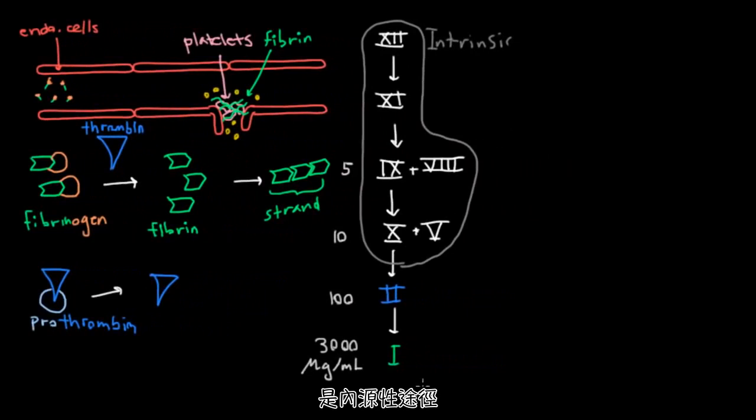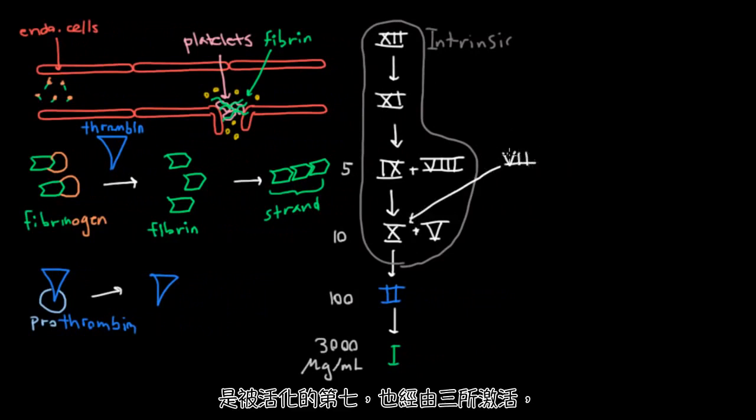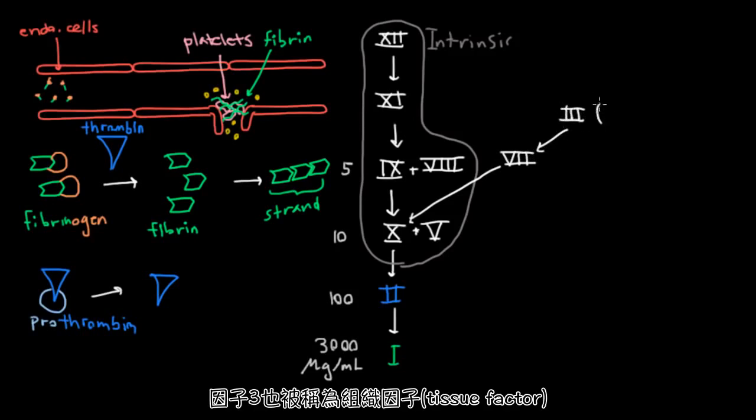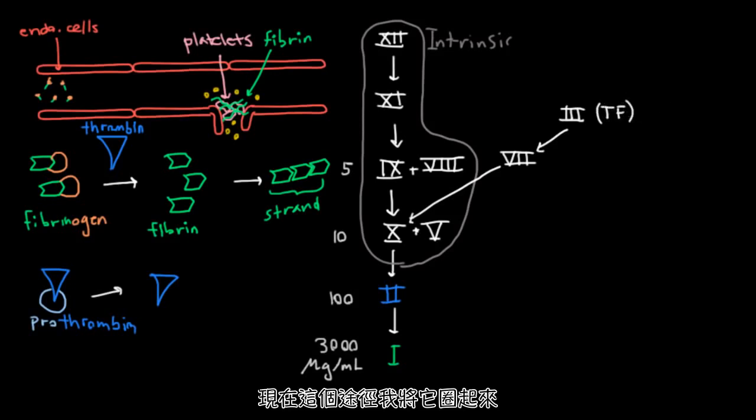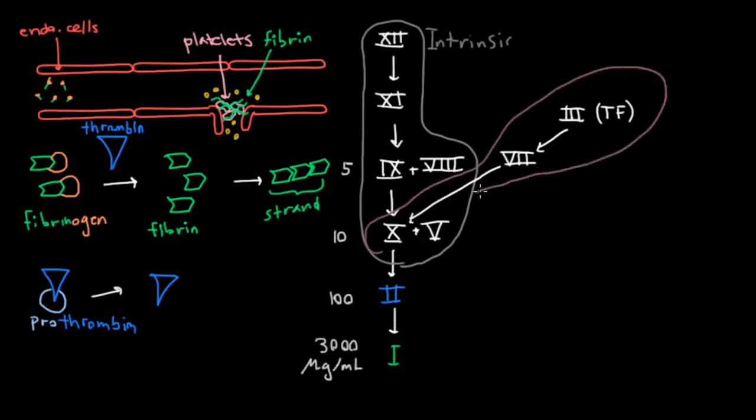But anyway, I said that this was the intrinsic pathway because there is another pathway, which also leads to an activated 10, but in this other pathway, what activates the 10 is an activated 7, which is activated by 3, also known as tissue factor. And I'll just write Tf for tissue factor. And this pathway, which I'll circle here, and I apologize for the poor organization, this one is known as the extrinsic pathway.